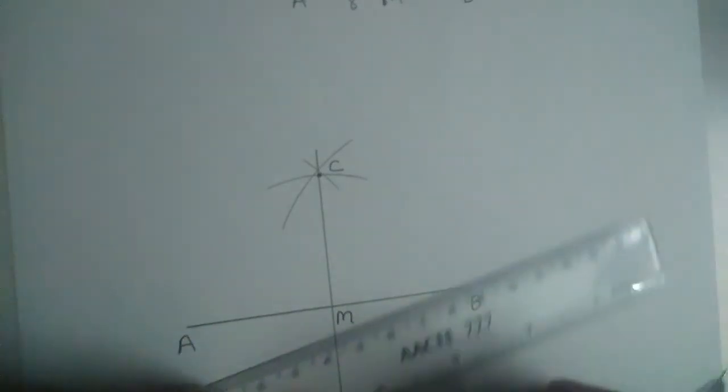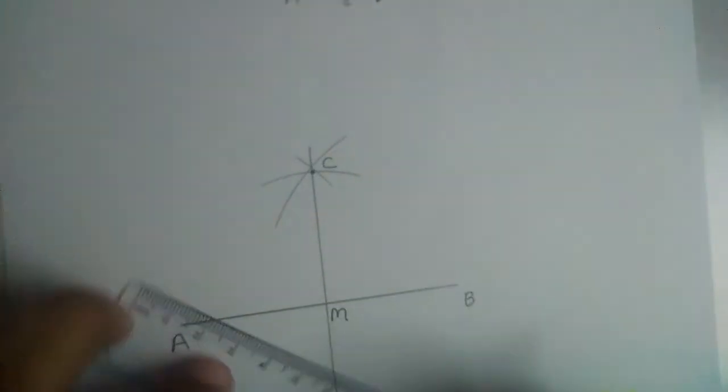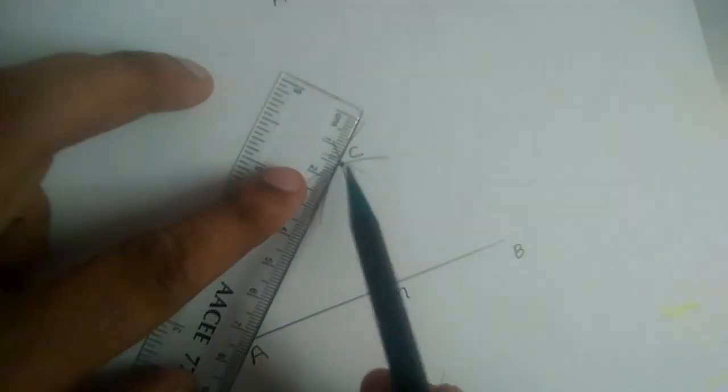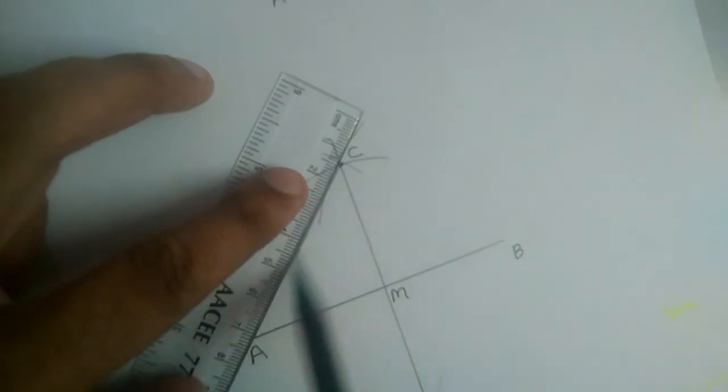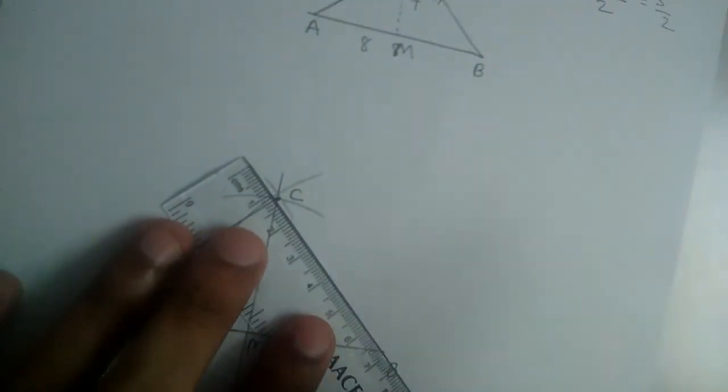See here, this is 4 cm and this is 8 cm base AB. Let us join C with A and C with B. Now this is the given triangle ABC.